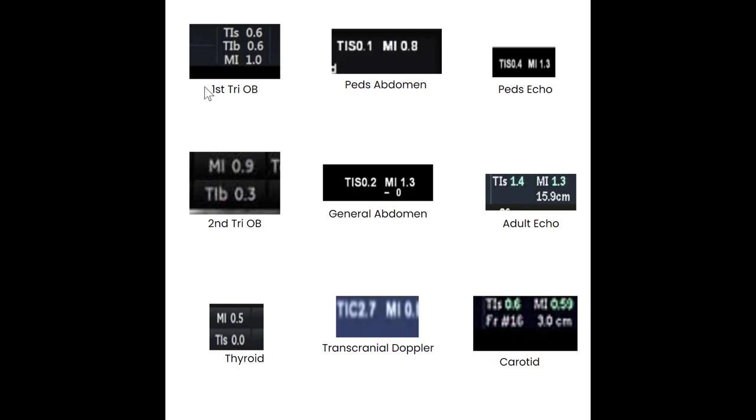Starting at the top here, we have a first trimester OB. The thermal indices are at 0.6. So this means that there is a possible increase of 0.6 degrees Celsius that could occur during this exam. We can see in the second trimester OB, because we are worried about the fetal bones, which have hardened at this point, we want to make sure that thermal indices is even lower. So we are at 0.3 here.